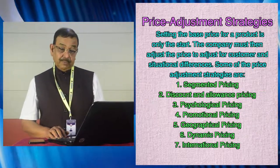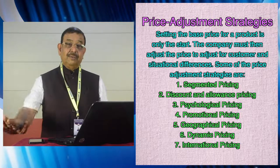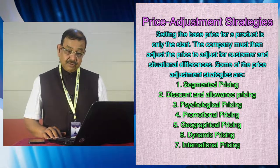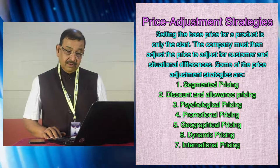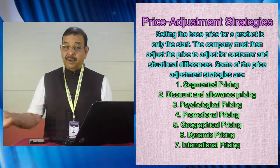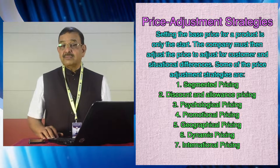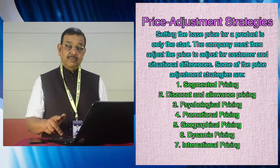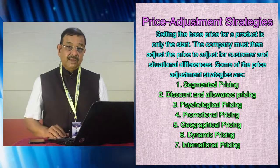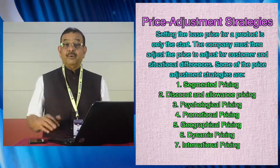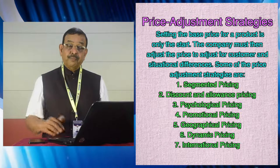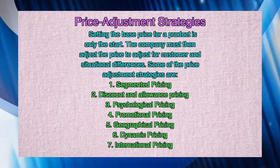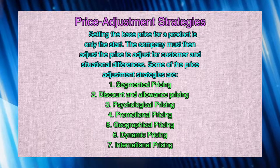Setting the best price for a product is only the start — that is the starting point — but there must be continuity. The company must then adjust the price to account for customer and market environment factors. Some adjustment strategies include: segmented pricing — no two segments or products are priced similarly, so we think segment-wise: low price segment, high price segment, medium price segment, premium category. We can also think about discounted allowance pricing — for prompt payment, we may give a discount; for late payment, there may be different terms. Allowances for prompt payment, deferred prices, or installment prices are all pricing-related aspects.